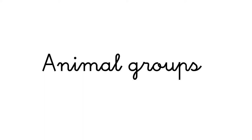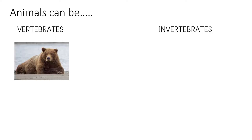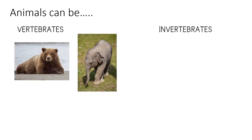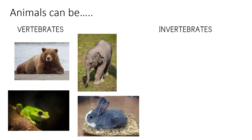Animal groups. Animals can be vertebrates if they have a backbone, like the bear, the elephant, the frog, or the rabbit.